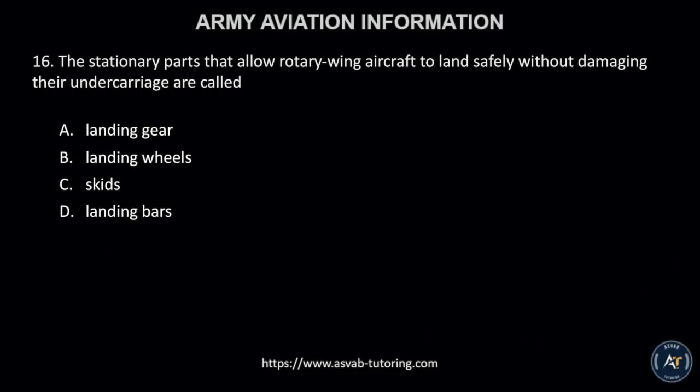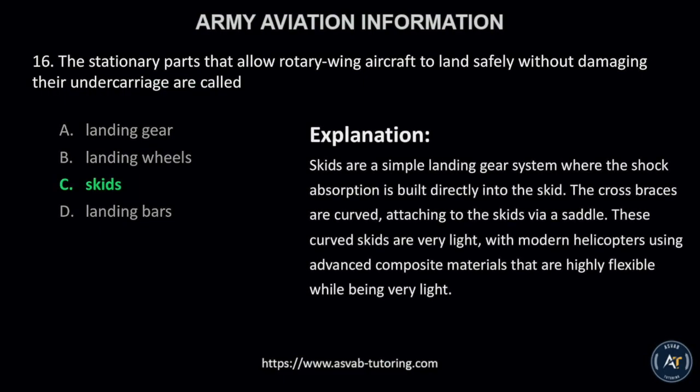Number 16. The stationary parts that allow rotary wing aircraft to land safely without damaging their undercarriage are called A, landing gear; B, landing wheels; C, skids; or D, landing bars? The correct answer is letter C, skids. Skids are a simple landing gear system where the shock absorption is built directly into the skid. The cross braces are curved, attaching to the skids via a saddle. These curved skids are very light, with modern helicopters using advanced composite materials that are highly flexible while being very light.